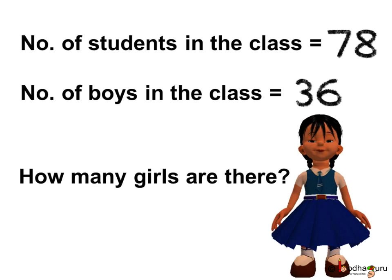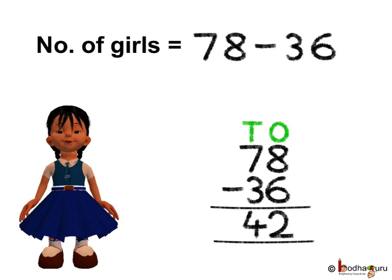Let us see what we know and what we need to find. We know the number of students in the class is equal to 78. The number of boys in the class is equal to 36. Now we need to find the number of girl students. We know the students consist of both boys and girls, which means we need to subtract the number of boys from the total number of students to find the number of girls.